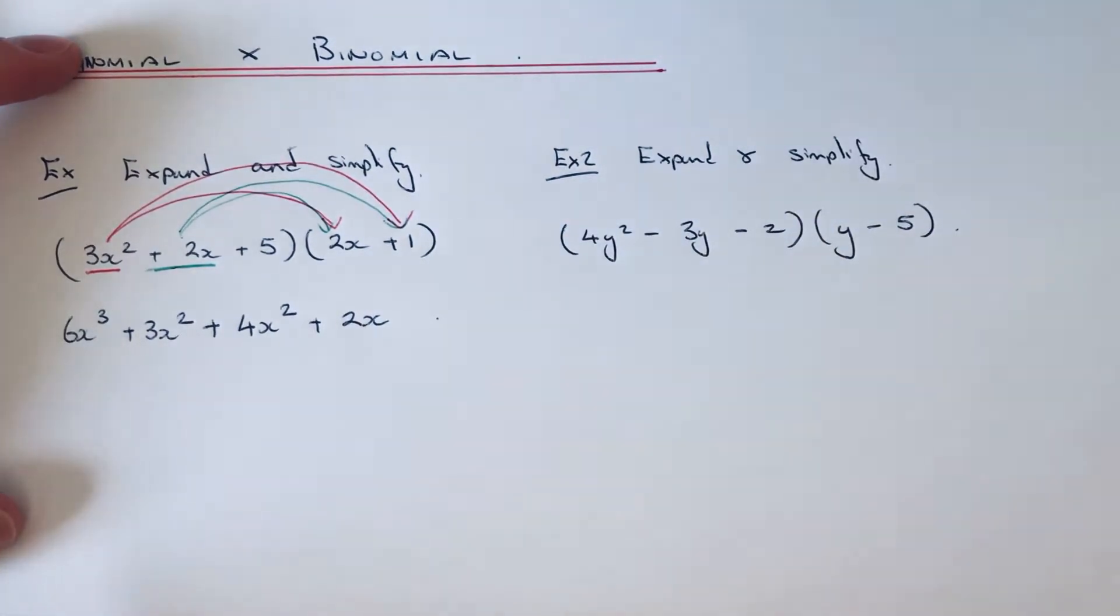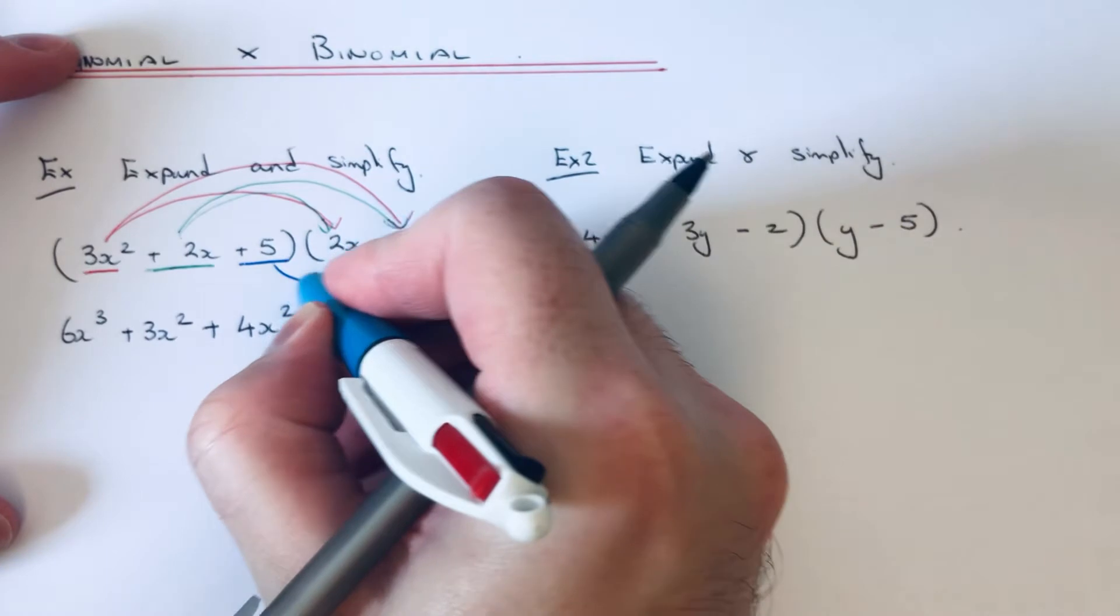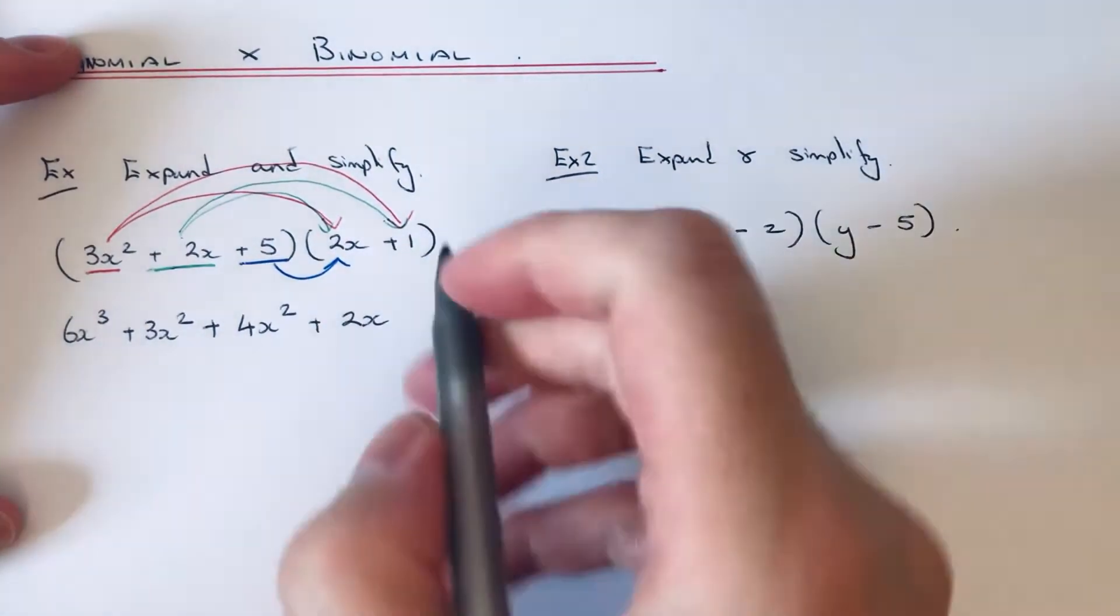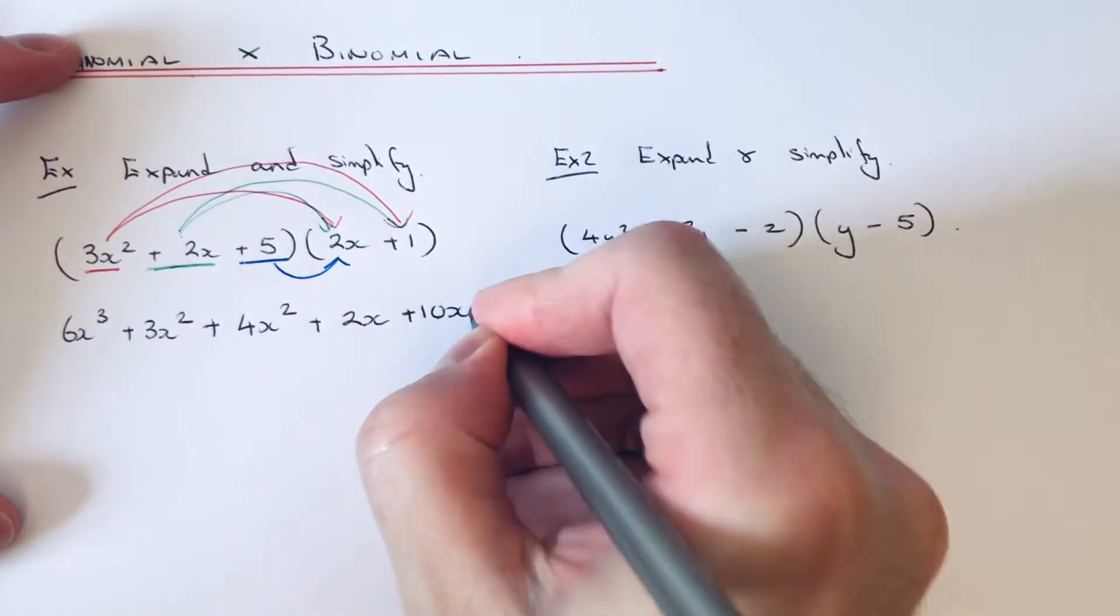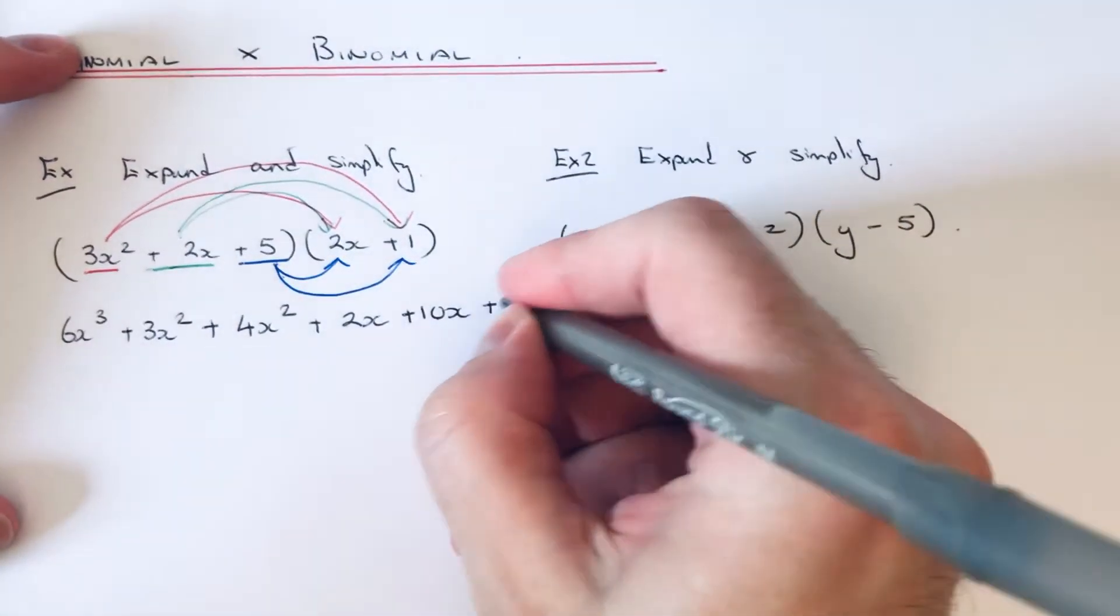Finally, we just move to our final term of our trinomial, which is the 5, and do the same again. So we do 5 times the 2x, which is 10x, and 5 times the 1, which is 5.